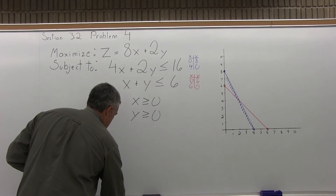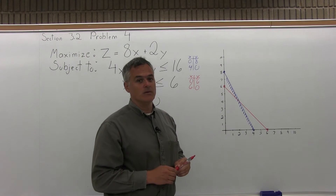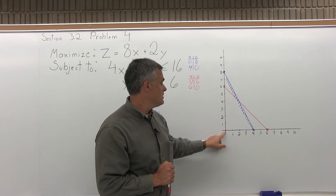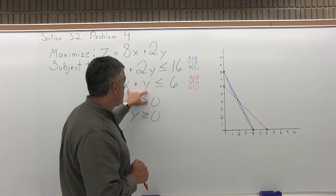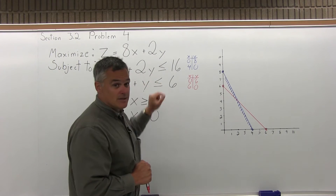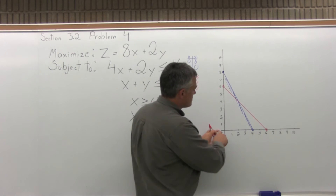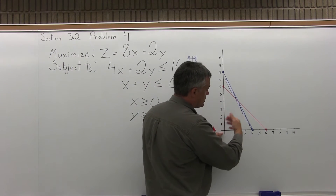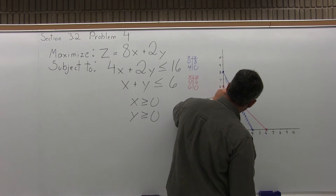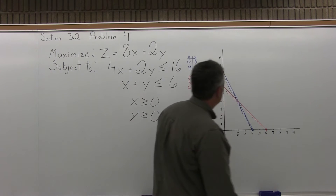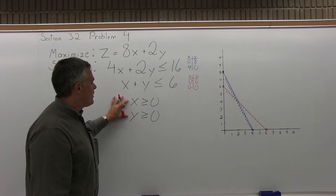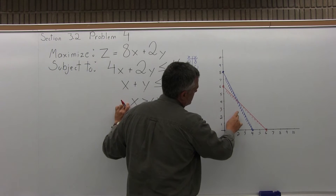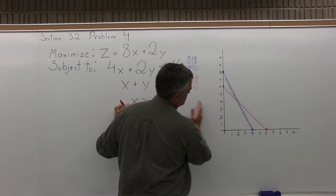Now I have to determine whether I shade above the red line or below it. Same process: take a test point not on the line — use (0, 0). Putting 0 for x and 0 for y gives the result 0 is less than 6, which is a true statement. So the test point was from the underneath side of the line, and the result was true, meaning the underneath side is the shaded region. The constraints x greater than or equal to 0 and y greater than or equal to 0 mean any point in your feasible region must have a positive x and y coordinate — you can't go below either axis.